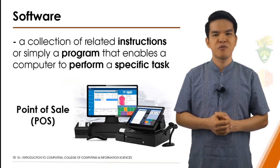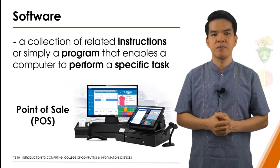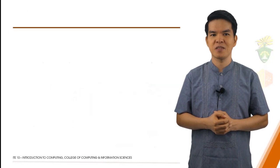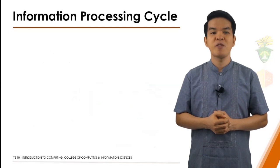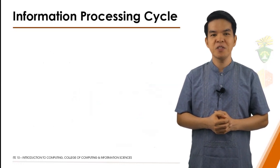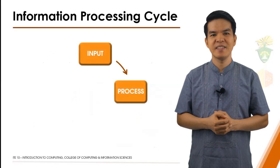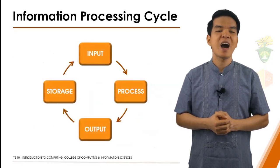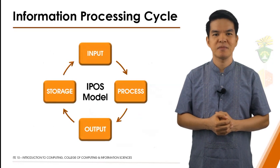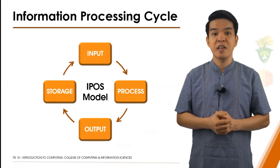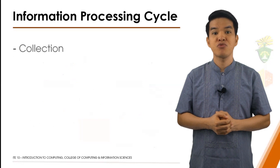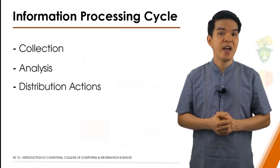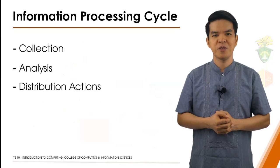In the context of computers and data processing, the information processing cycle has four stages — take note, four stages: Input, Process, Output, and Storage. This is simply called the IPOS model. Each of these stages plays an important role in the collection, analysis, and distribution of actions performed by a computer system.